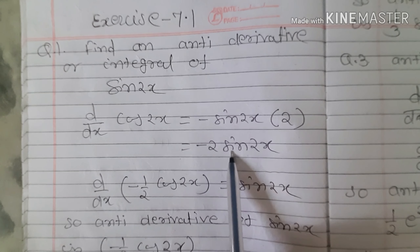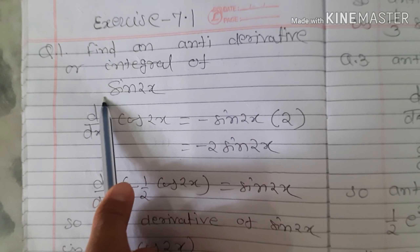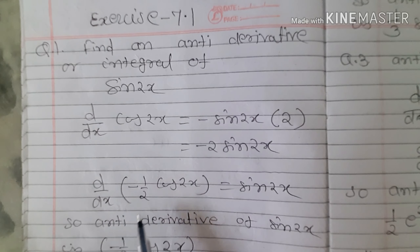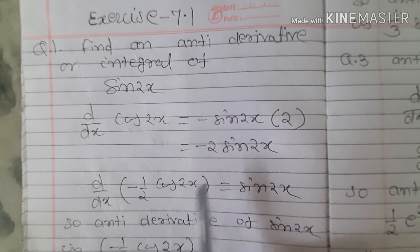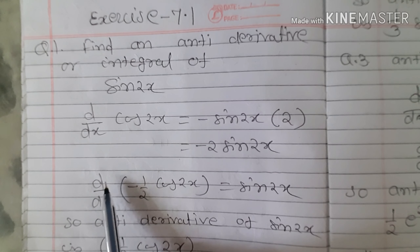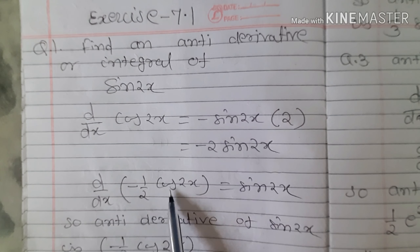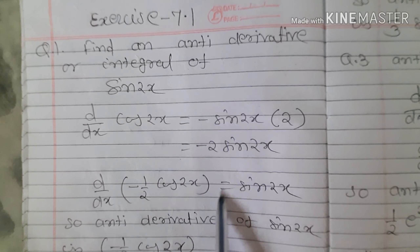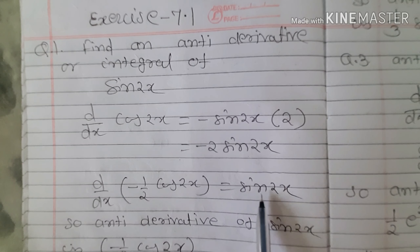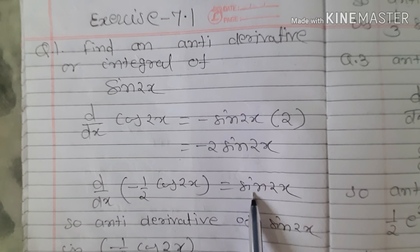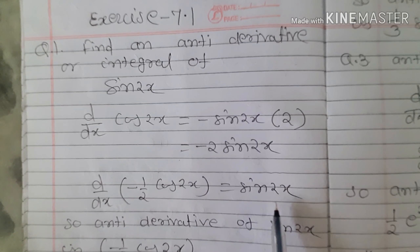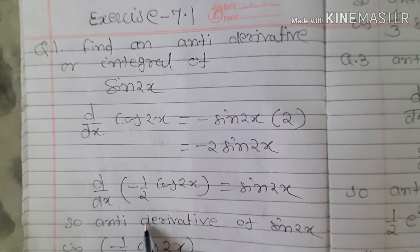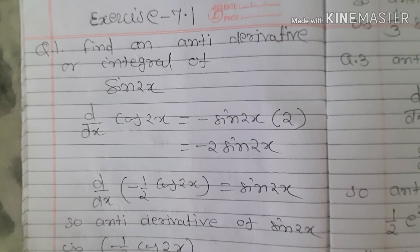The result is -2 sin 2x. To find the antiderivative of sin 2x, cross-multiply the -2: d/dx of (-1/2)cos 2x equals sin 2x. This means when we differentiate -1/2 cos 2x, we get sin 2x. So the antiderivative of sin 2x is -1/2 cos 2x.